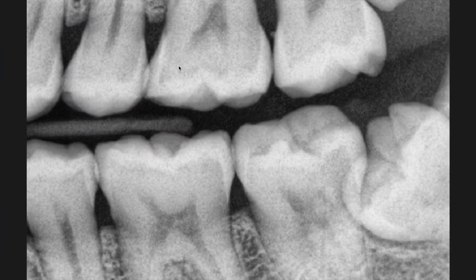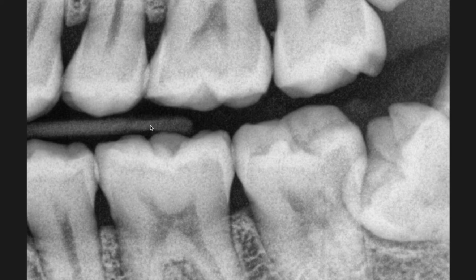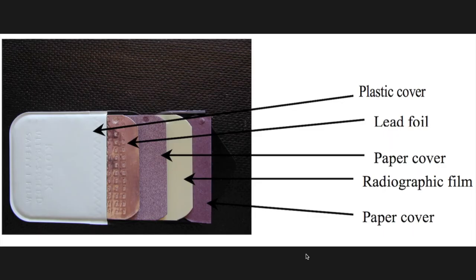This is the bite wing radiograph — only the crown structures of the upper and lower arch are visible simultaneously. The bite wing has a plastic loop already manufactured on the film packet. The film packet includes a plastic cover made of soft vinyl, which is waterproof to prevent ingress of saliva and light.